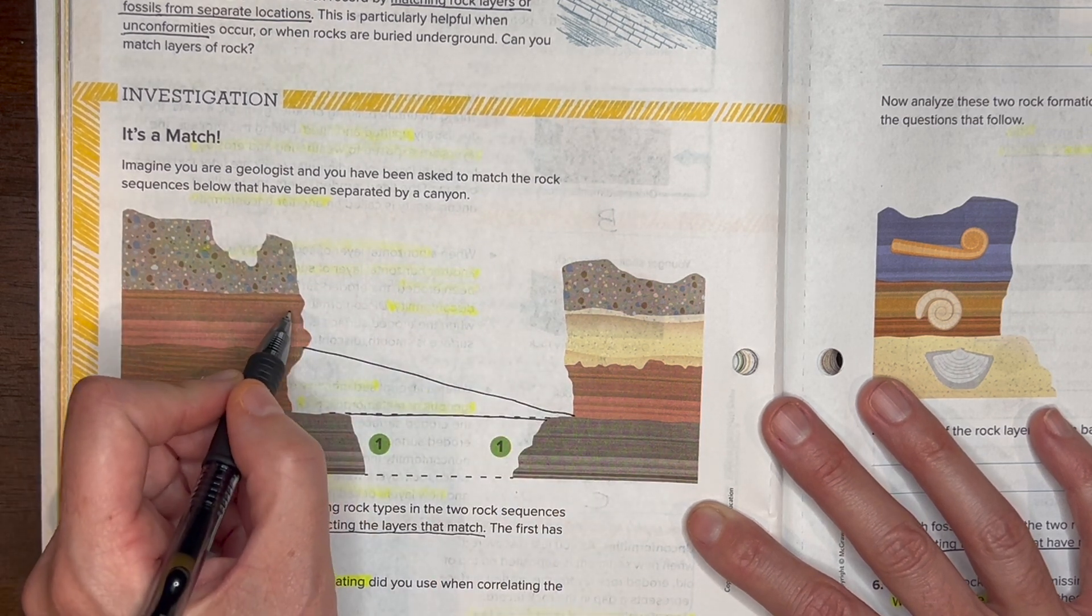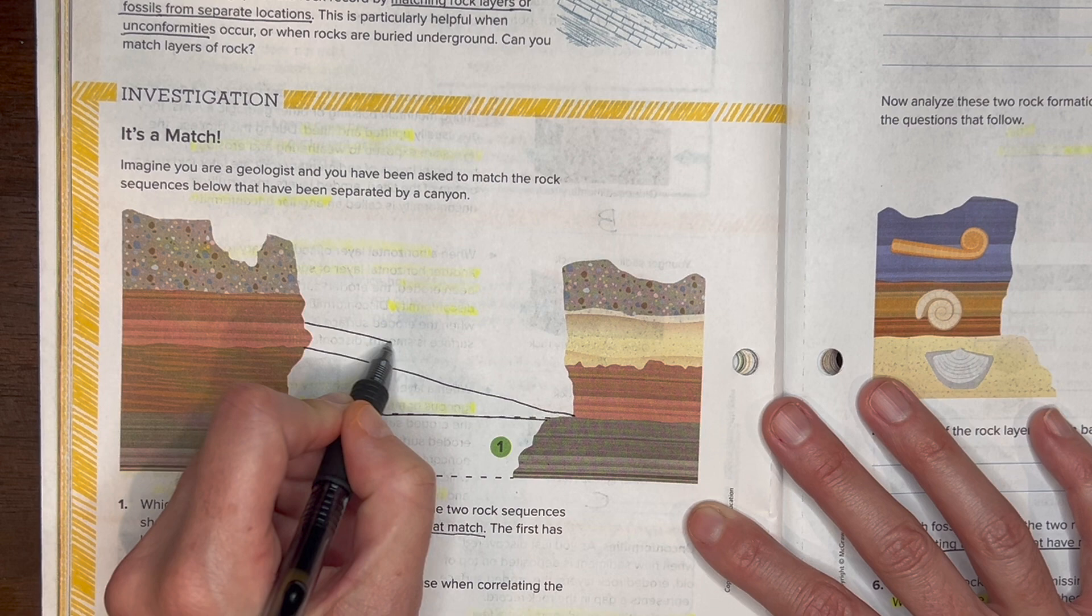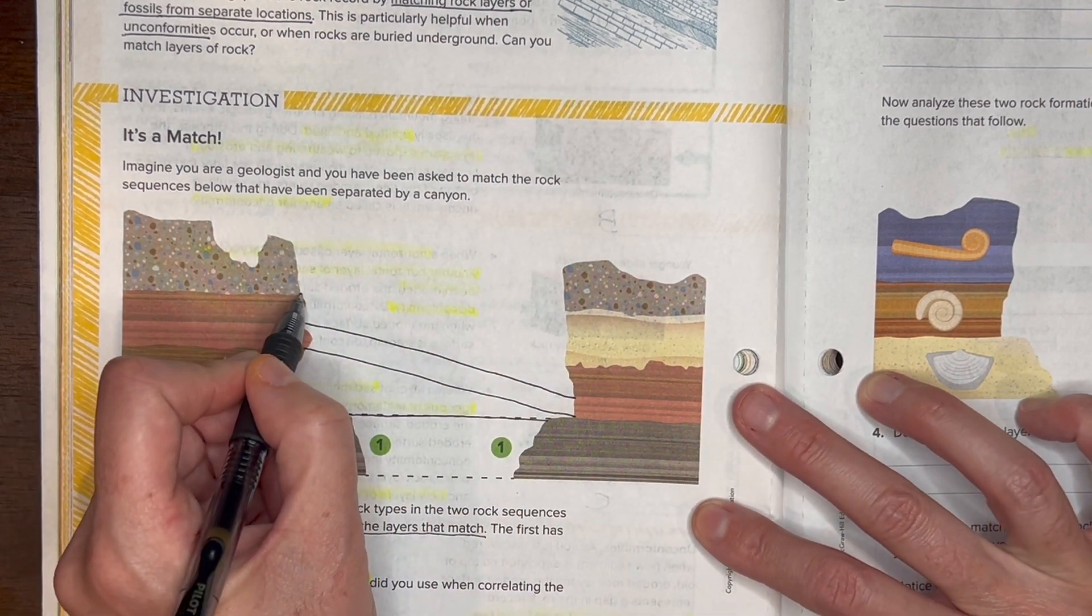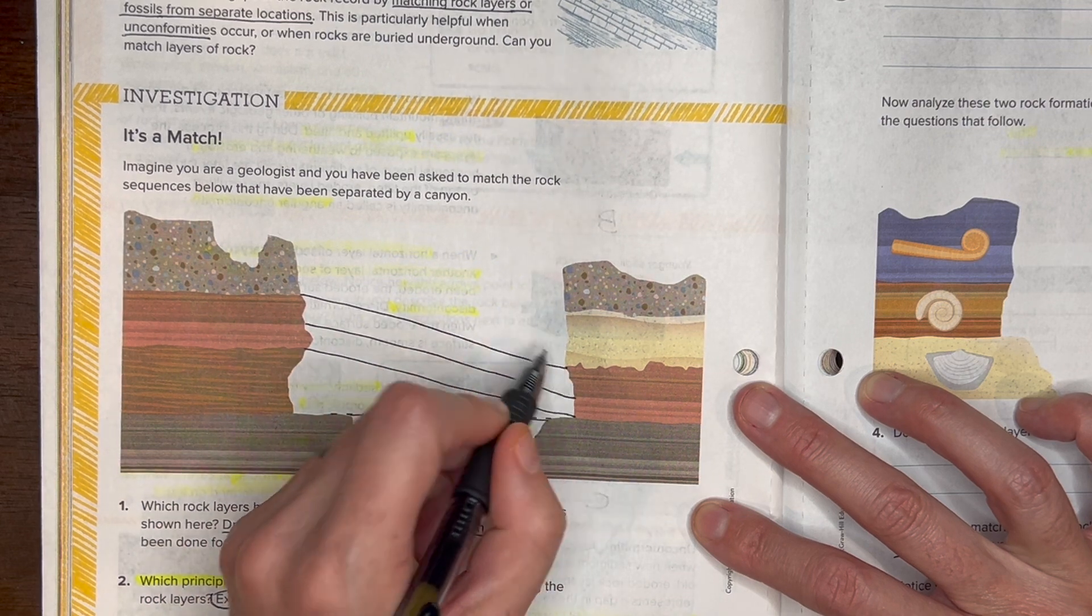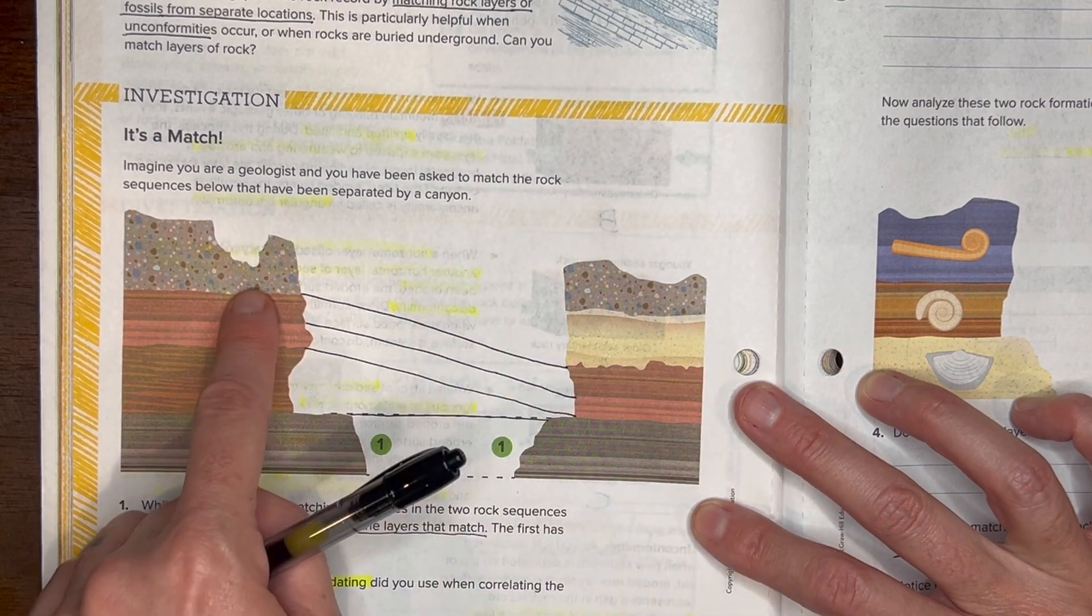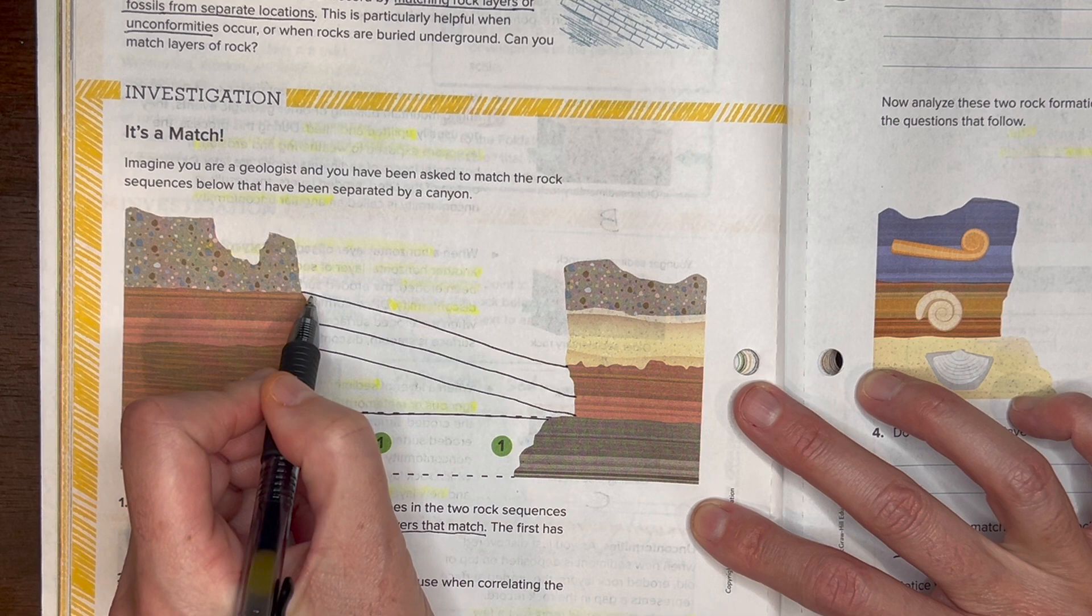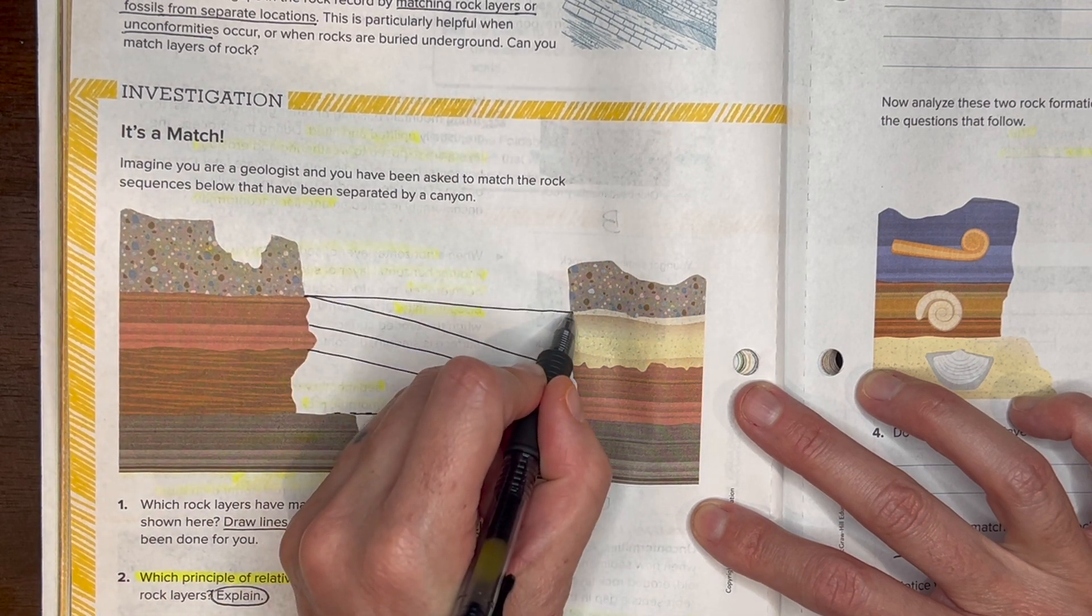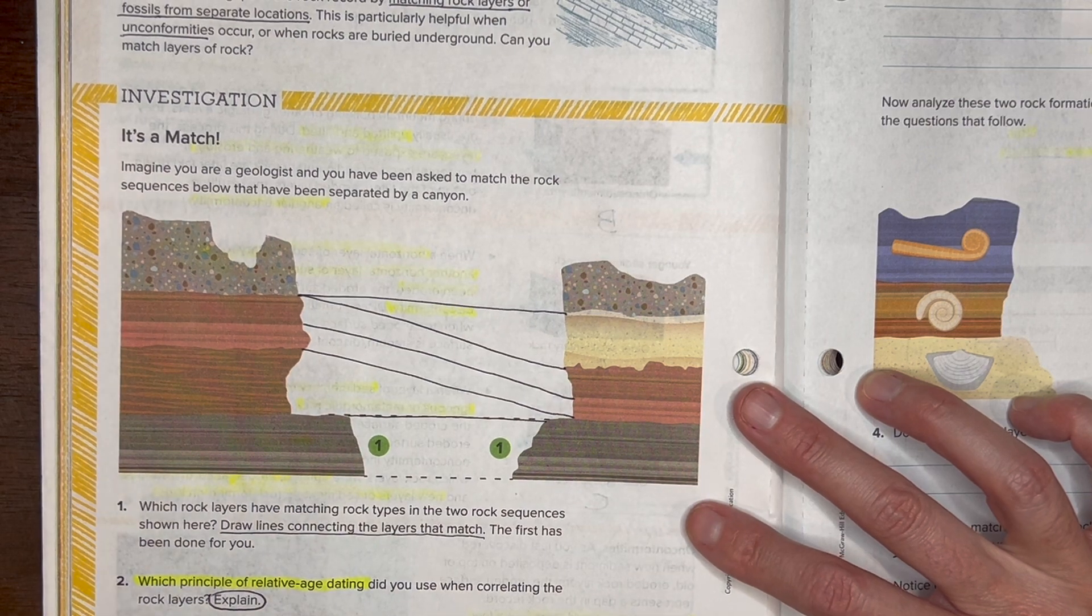And then this next one matches in this next brown layer here. And then here's the top of that brown layer, but here's this white one but it's not over here, so I'm just going to go straight from this kind of grayish one over here. Okay, so we've matched up the rock types.